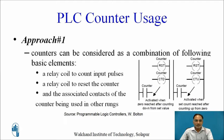The first approach: a counter can be considered as a combination of basic elements. A relay coil counts input pulses — CTD represents a down counter relay coil, whereas CTU represents an up counter relay coil. A second element is a relay coil to reset the counter. The third element is a dependent contact of the counter used in other rungs, and these contacts get activated whenever the counter function is executed.